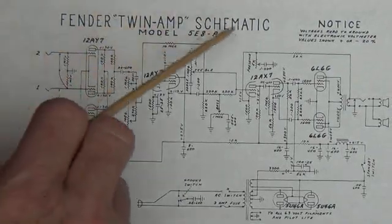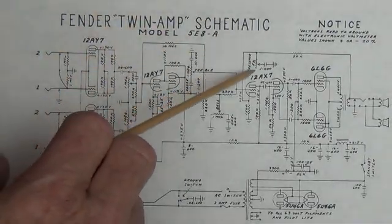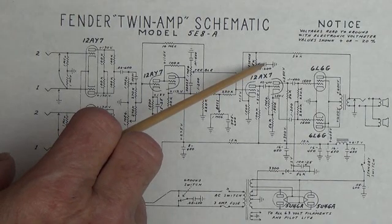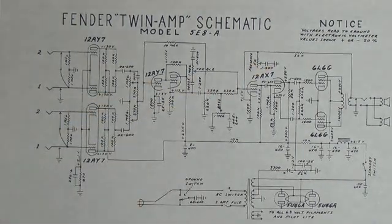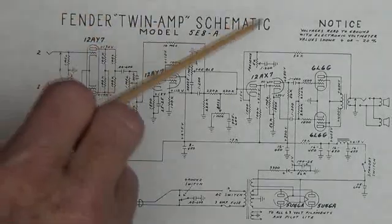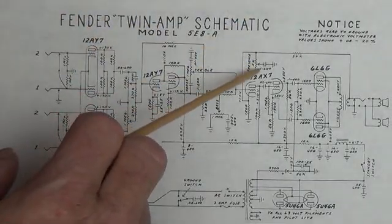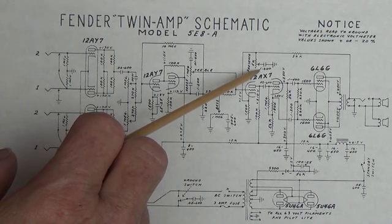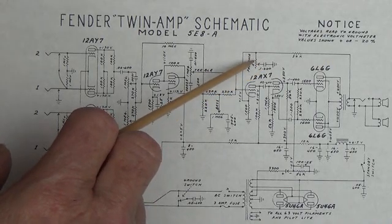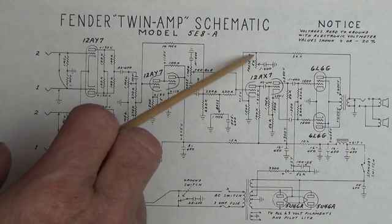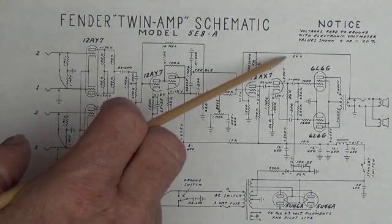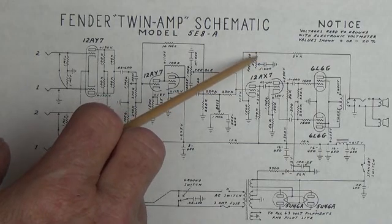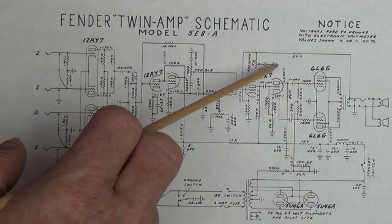The presence control is really quite simple. It consists of a 5K pot with the wiper connected to a 0.1 microfarad capacitor that goes to ground. Low value capacitors like this will readily pass high frequencies and block low frequencies. So, depending on the setting here of the pot, more or less of the high frequency that's present in the negative feedback signal will go to ground.